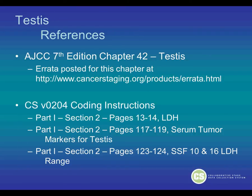References for this can be found in the AJCC 7th Edition, Chapter 42 on Testes. There has been an errata posted for this chapter at our website — be sure to check that and update your book if needed. You can also find references in Collaborative Stage version 0204 coding instructions: Part 1, Section 2, pages 13 to 14 for LDH; pages 117 to 119 for serum tumor markers for testes; and pages 123 to 124 for Site-Specific Factors 10 and 16 on the LDH range.